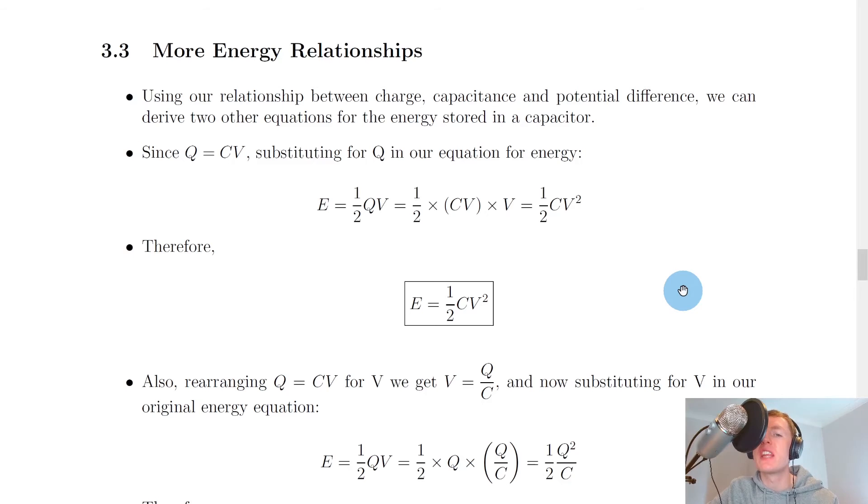Lastly, we'll look at some more energy relationships that exist. Using a relationship between charge, capacitance, and potential difference, we can derive two other equations for the energy stored in a capacitor. Since q equals cv, substituting for q in our equation for energy, e equals a half qv, we can substitute in the cv for q here to get a half times cv times v. Notice the v times v here will give us a v squared term, so this gives us a half cv squared.